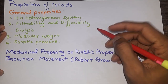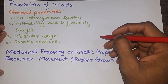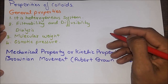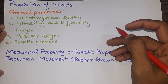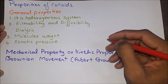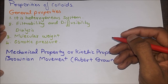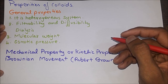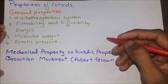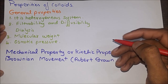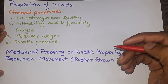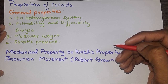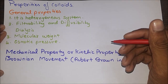Properties of colloids — General properties: colloidal systems are heterogeneous. Filterability and diffusability: colloidal particles can pass through filter paper but cannot pass through a semipermeable membrane. This property is known as dialysis — the removal of dissolved impurities (electrolytes) from colloidal solution by diffusion through a semipermeable membrane is known as dialysis, and it is used to purify colloidal solutions. Colloidal particles have very high molecular weight. Osmotic pressure of colloidal solutions is very low because the number of particles is small; osmotic pressure is inversely proportional to molecular weight.